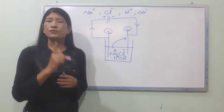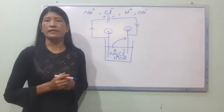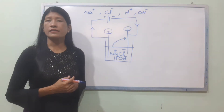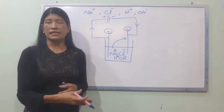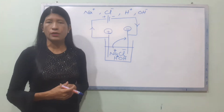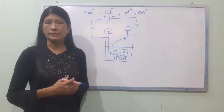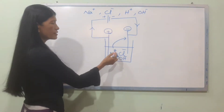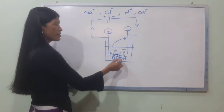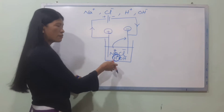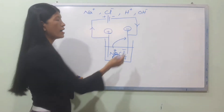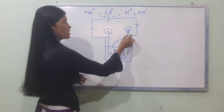The position of the ions in the electrochemical series determines which ions are discharged. Na+ and H+ move to the cathode. The reaction determines which ion will be discharged at the cathode.